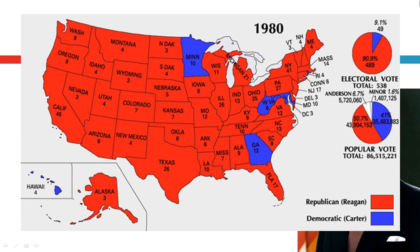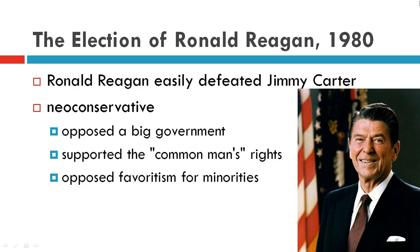We did touch on the election of 1980 in the previous chapter, but you can see from the election map that Reagan has significant national support, with almost 91% of the electoral vote.